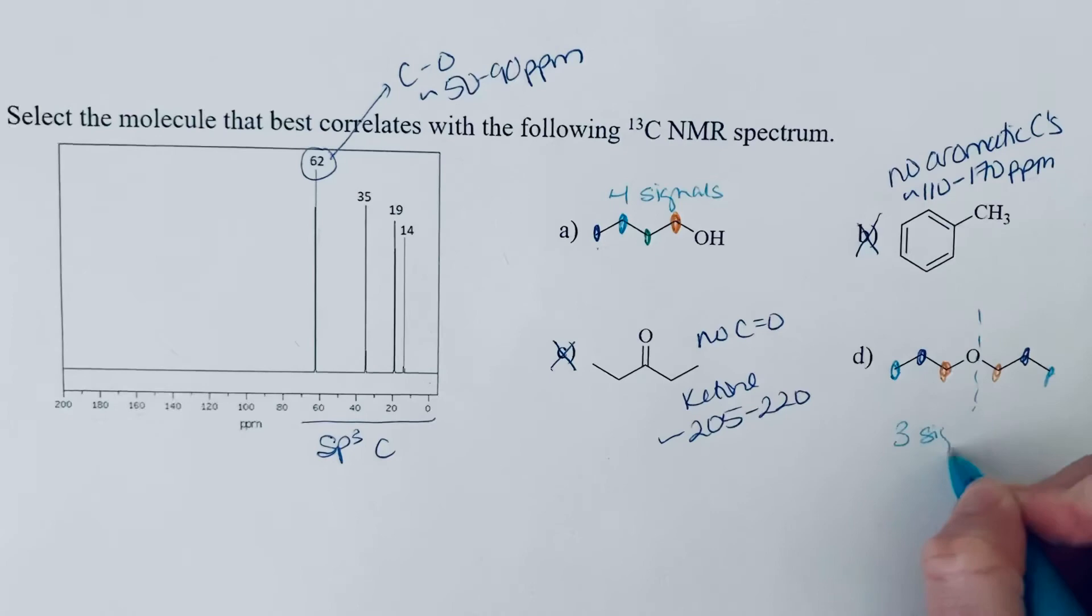So the types of carbons that we saw allowed us to quickly eliminate a couple of our options. And then the number of signals allows us to say that this matches a lot better with A. So that should be the one that we select.